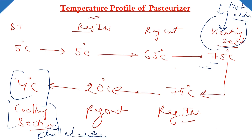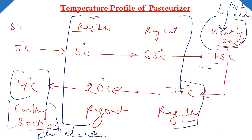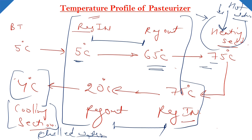Remaining heating aur cooling humara ka is section mein ho raha hai - regeneration section. Yahan pe hum clearly dekh sakte hain regeneration section mein heat exchange kis kis ke beech ho raha hai. This one is the pasteurized milk and this one is the raw milk. Pasteurized milk ka hi use kar rahe hain ham log raw milk ko heat up karne ke liye. Agar ham pasteurized milk ka istamal na karein, toh milk ko 5 degree Celsius se 65 degree Celsius tak heat karne ke liye hame hot water ka istamal karna padta. Agar regeneration section na lagayen pasteurizer mein, toh hot water ya steam ka istamal karna padta - isse zyadha heat load badhega, steam ki requirement hume zyadha rehti process mein.